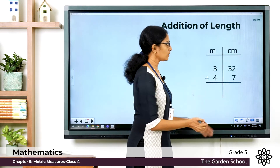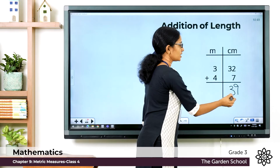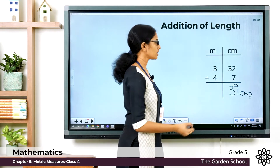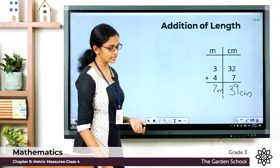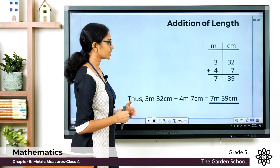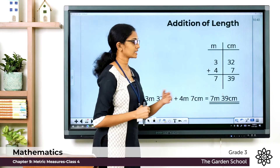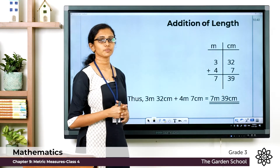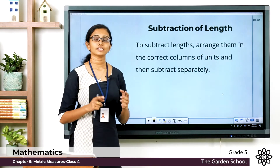Starting from the centimeter column: 2 plus 7 is 9, so with the 3 it is 39 centimeters. In the meter column, 3 plus 4 is 7 meters. So the total length — 3 meter 32 centimeter plus 4 meter 7 centimeter — is equal to 7 meter 39 centimeter. It's very easy; just make sure you are writing the measurements in proper columns of units.